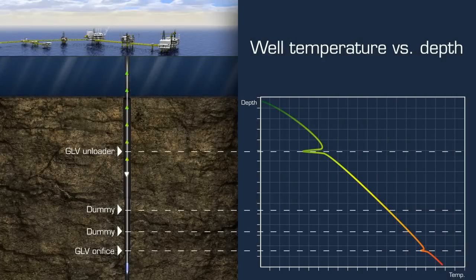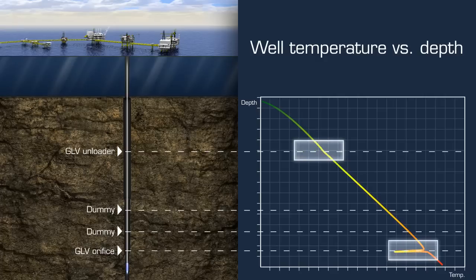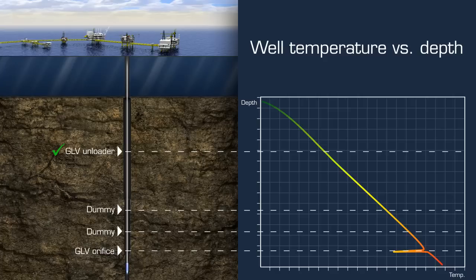A second temperature plot confirms the success of the job. The new upper valve is now closing and all the gas is directed to the bottom of the well. The plot shows no leakage from the dummies.